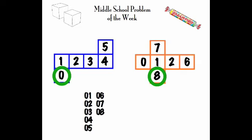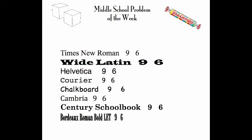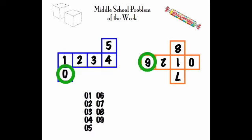So it's tricky to do the 9, but this is the answer to the problem. We looked at all of our favorite fonts here at the Latin School, and on all of these fonts, the 9 and the 6 are identical when turned upside down. So doing that, we simply turn the second cube upside down, and there's 9.